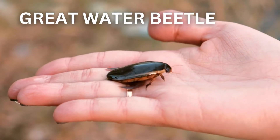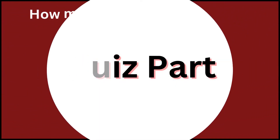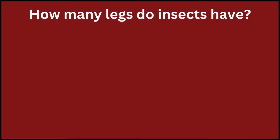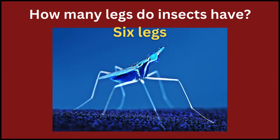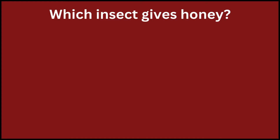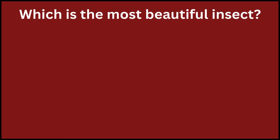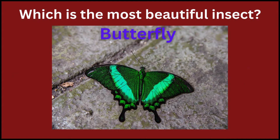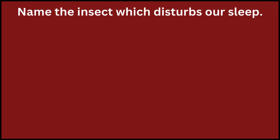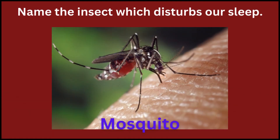Quiz part! How many legs do insects have? Most insects have six legs. Which insect gives honey? Honeybee. Which is the most beautiful insect? Butterfly. Name the insect which disturbs our sleep. Mosquito.